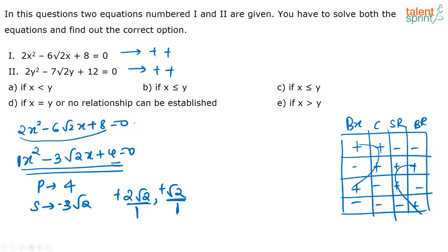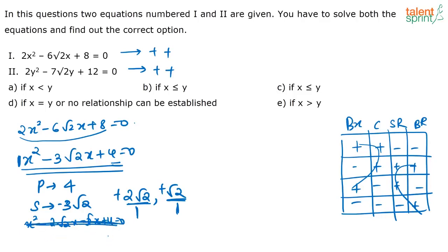The advantage of this method is that otherwise you would have to split and write: x² - 2√2·x - √2·x + 4 = 0, then take out factors. With the sign method, those steps can be avoided.